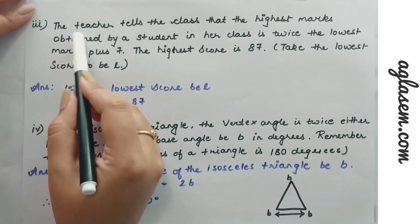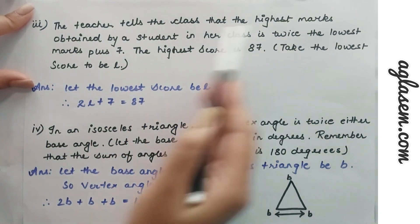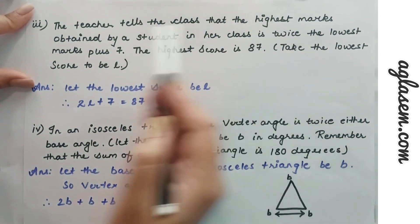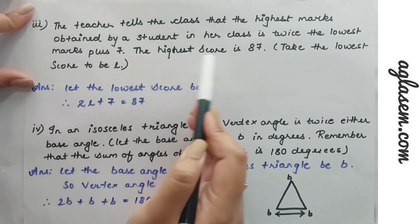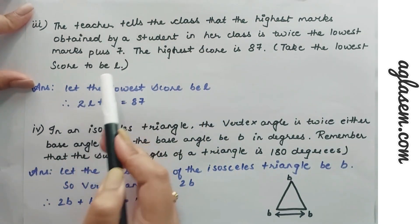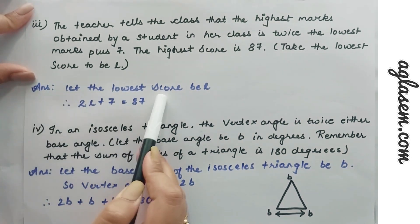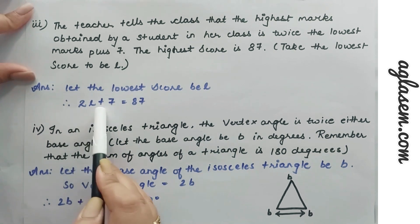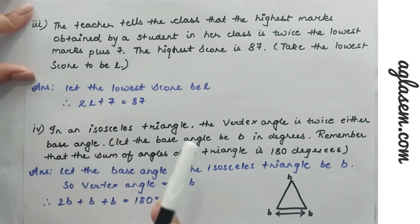Third case: the teacher tells the class that the highest marks obtained by a student is twice the lowest marks plus 7; the highest score is 87. Taking the lowest score to be l, the equation would be 2l + 7 = 87.